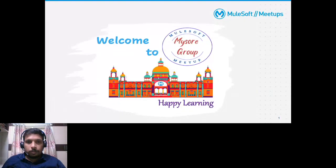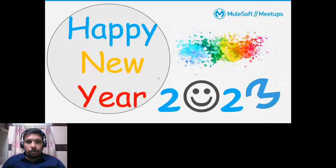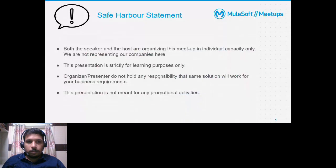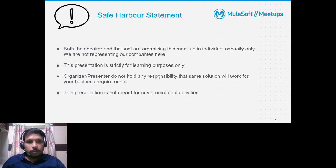Hi and welcome everyone to the MuleSoft meetup group. Thanks for joining and happy new year. Today we are covering how we can design fault-tolerant APIs and how we can keep our application network intact. Before the presentation, let me read out a safe harbor statement: both the speaker and the host are organizing this meetup in individual capacity only. We are not representing our companies here. This presentation is strictly for learning purposes only and not meant for any promotional activities.